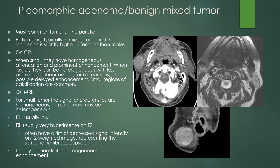The pleomorphic adenoma, or benign mixed tumor, is the most common tumor of the parotid. Patients are typically middle-aged, slightly higher in women than men. On CT, they tend to be homogeneous and hyperdense and can exhibit prominent enhancement. When larger, they can be more heterogeneous in density with less prominent enhancement, areas of necrosis, delayed enhancement, and small regions of calcification. On MRI, small tumors tend to be more homogeneous in signal; larger tumors are more heterogeneous. They tend to be low on T1 and very hyperintense on T2, and can have a rim of T2 hypointensity representing the fibrous capsule. Here is a classic appearance of a pleomorphic adenoma on CT: a hyperdense, well-circumscribed mass.